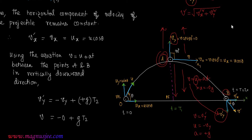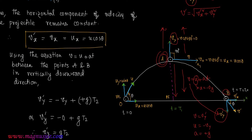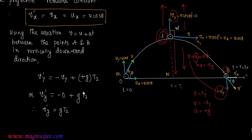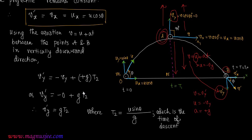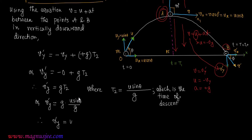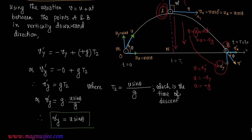Vy prime = −0 + g·T2, where Vy = V cos 90° = 0. Therefore, Vy prime = g·T2. Now T2 equals U sin theta divided by g, which is the time of descent — the time taken by the projectile to move from point A to B during downward motion. Therefore, Vy prime = g × (U sin theta / g) = U sin theta.